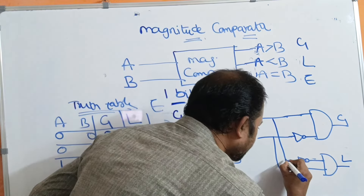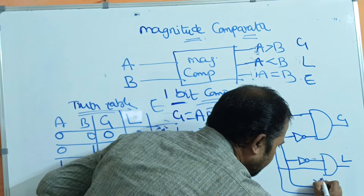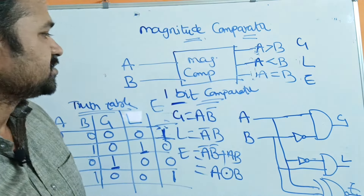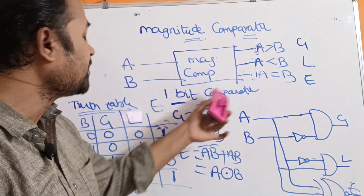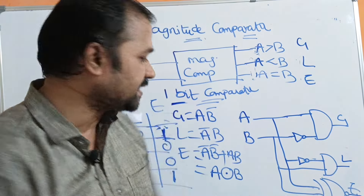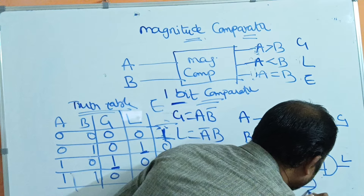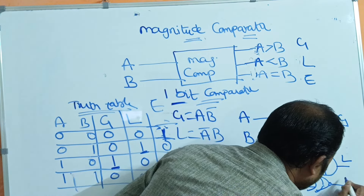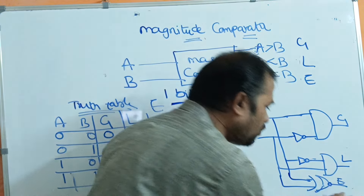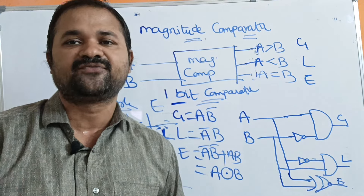For the equals-to output, the inputs are A and B and the formula is exclusive-NOR. The exclusive-NOR gate uses a small circle on the output — without the circle it becomes exclusive-OR. So this is the logic circuit for the 1-bit comparator, showing the truth table and the diagram. In the next videos, we will see 2-bit and 4-bit comparators.